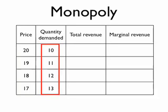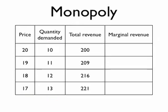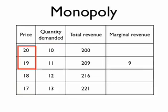Now the firm has to decide exactly how much would maximize profits. And to do that, it needs to take a look at the marginal revenue. Marginal revenue is going to be based on the total revenue. Total revenue is simply price times quantity for each of the different possible outcomes. And marginal revenue is simply the additional revenue from selling one more unit of output. So let's examine the marginal revenue if price drops by one unit, with a subsequent increase in quantity demanded by one unit.